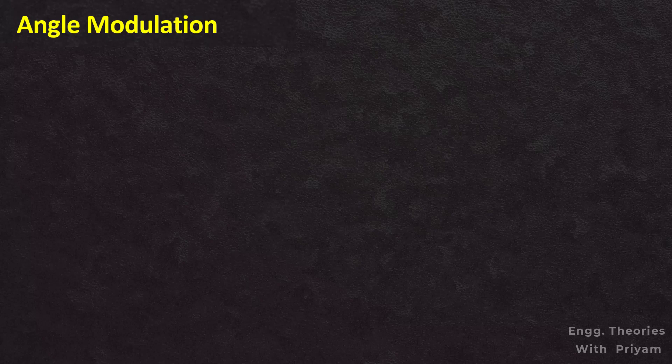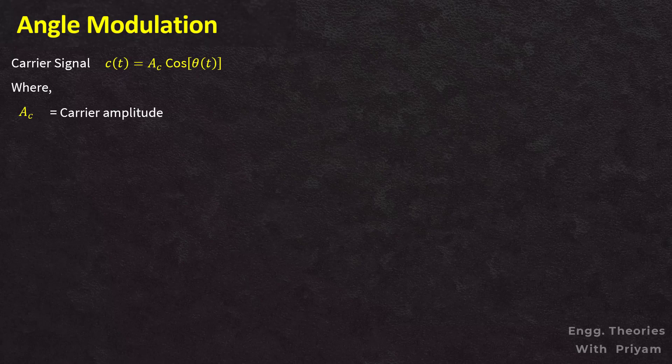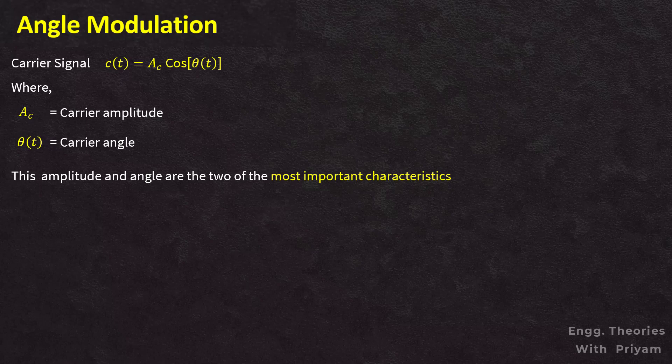From this lecture we will start the angle modulation of the communication system. A carrier signal can be defined as c(t) = Ac·cos(θ(t)), where Ac is the carrier amplitude and θ(t) is the carrier angle. For the carrier signal, amplitude and angle are the two most important characteristics, and the angle part consists of frequency and phase.